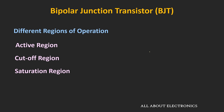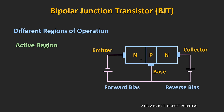Depending on the biasing, the BJT can be operated in three regions: the active region, the cut-off region, and the saturation region. In the active region, the emitter-base junction is forward biased and the base-collector junction is reverse biased. If the voltage at the emitter is VE, the voltage at the base is VB, and the voltage at the collector is VC, then to operate the BJT in the active region, the collector voltage should be greater than base voltage, and the base voltage should be greater than emitter voltage.